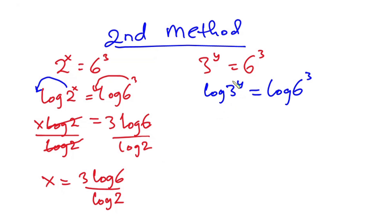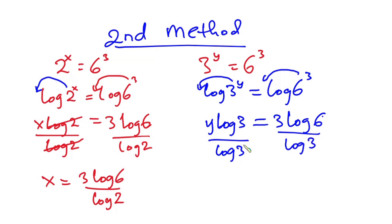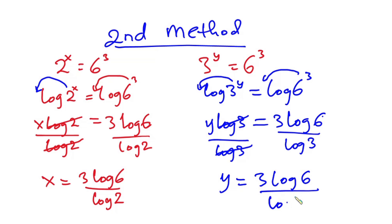Now for the second equation, I'll take log on both sides: log of 3 to the power y equals log of 6 to the power 3. Moving y to the front gives y log 3 equals 3 log 6. Dividing each side by log 3, we get y equals 3 log 6 over log 3.